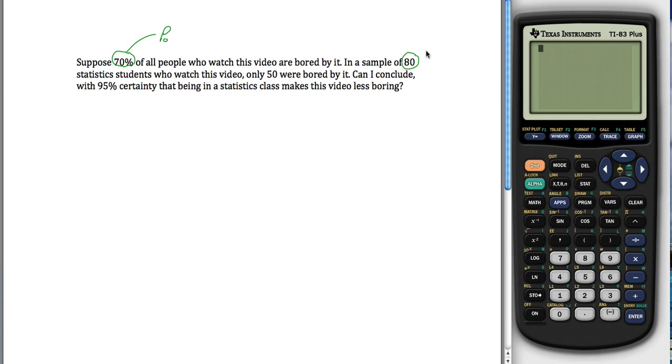In a sample of, so that'll be key, you'll always be given population stuff and sample stuff. In a sample of 80 statistics students who watch this video, only 50 were bored by it. Your calculator uses x and n for these two things. This is the number of people in your sample, and this is the number of people that fit this criteria in that sample. And we want our conclusion to have 95% level of confidence. In other words, alpha is equal to 0.05.